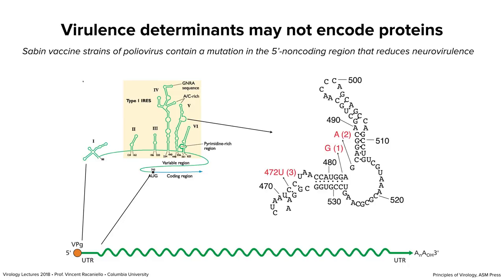The vaccine strains of polio made by Albert Sabin — the same guy who said I didn't know what I was talking about — all have a mutation in the five-prime non-coding region that makes them unable to cause disease. You ingest them, they replicate in your intestine, you get immunity, but you don't get paralyzed. All three serotypes of polio 1, 2, and 3 have single base changes in the five-prime non-coding region that block the ability of the virus to paralyze you.